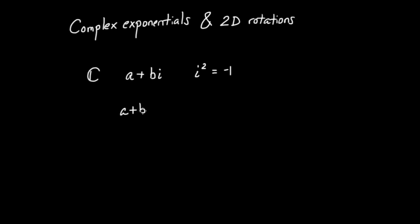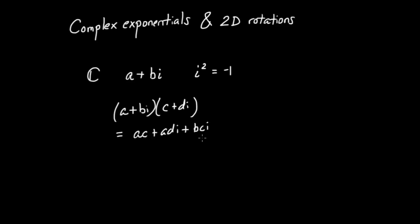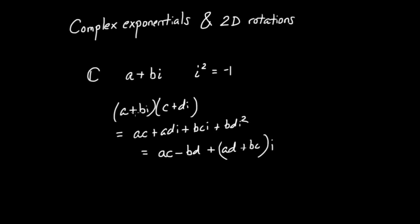One of the most interesting parts of the complex numbers is the special rule for multiplying them. If I have two complex numbers, let's say A plus Bi and C plus Di, they get multiplied to generate the following. Just distributing, I have A times C, then A times Di, then Bi times C, which I'll write as BC times i. And finally, B times D times i squared. Using that essential property that i squared is minus one, I find that the new real part is given by AC minus BD, and that the new imaginary part is AD plus BC, all times i.